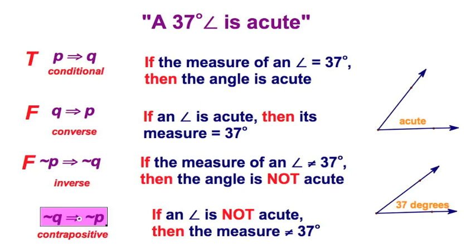Going back to the final statement, the contrapositive, not Q. If it's not acute, well, it can't be 37. That's going to have a value of true. And I see this pattern. True, false, false, true.